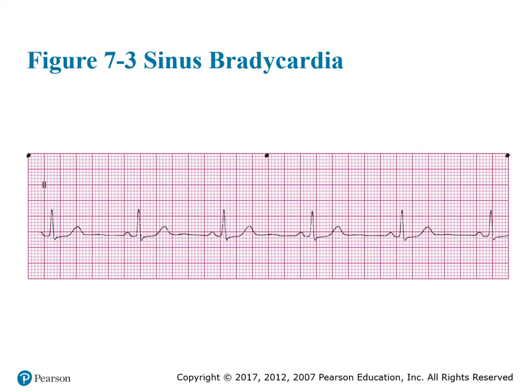This is what a normal sinus bradycardia rhythm looks like. If you look at your R-to-R intervals, they're spread out. But for every P there is a QRS that it's married to — it's just trudging along slowly.